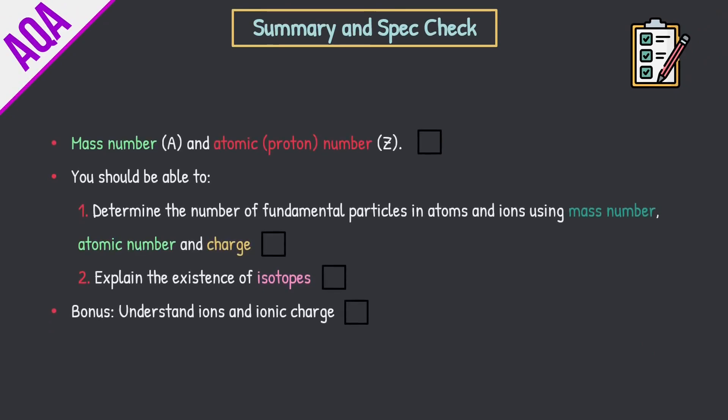Let's look at a final summary and spec check. Mass number is given the symbol capital A, and atomic or proton number is given the symbol capital Z. You should be able to determine the number of fundamental particles in atoms and ions using mass number, atomic number, and charge — we went through a bunch of practice questions for that. You need to be able to explain the existence of isotopes: define what an isotope is and the fact that it has a different number of neutrons. Lastly, a bonus: understand ions and ionic charge. I hope you found this video helpful. Give it a like, send it to mates who are struggling, and best of luck with your revision and upcoming exams. Until next time, peace.